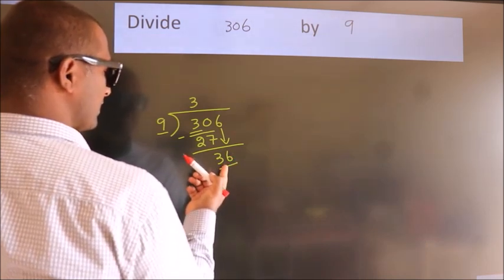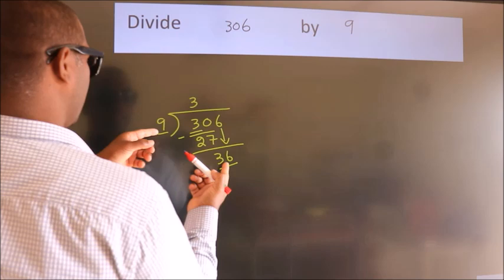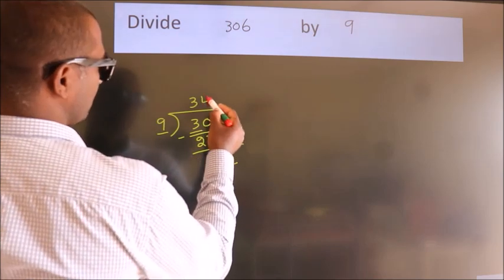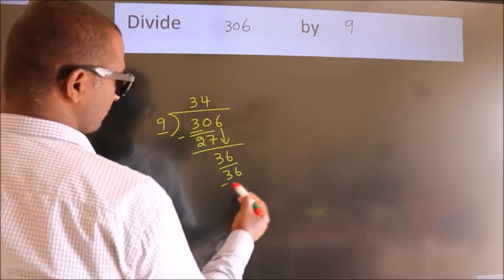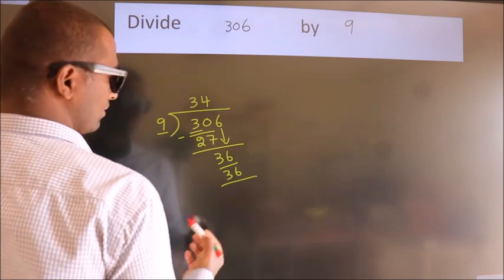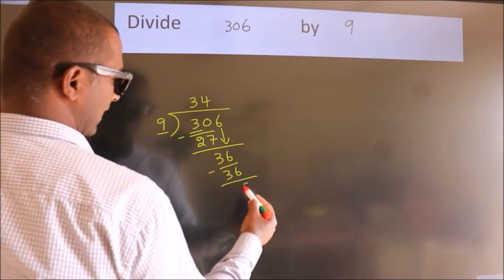When do we get 36? In the 9 table, 9 threes, 36. Now, we subtract. We get 0.